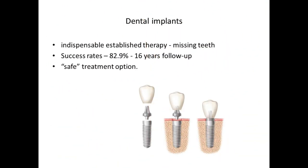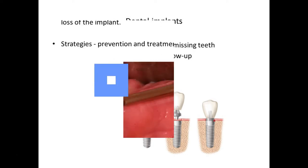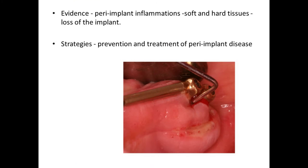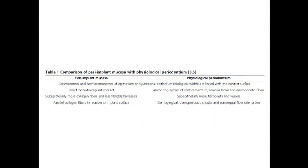Nowadays, dental implants have become an indispensable, established therapy for missing teeth. The success rate ranges from 82.9% in a 16-year follow-up, so it is a safe treatment option. Inflammation of the peri-implant tissue, either soft tissue or hard tissue, can ultimately lead to loss of the implant. There are a lot of strategies to prevent and treat peri-implant disease.